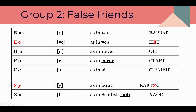Let's repeat the false friends: В, Е, Н, Р, С, У, Х. One more time, because it's important not to be mistaken with these letters: В, Е, Н, Р, С, У, Х. Let's move on.